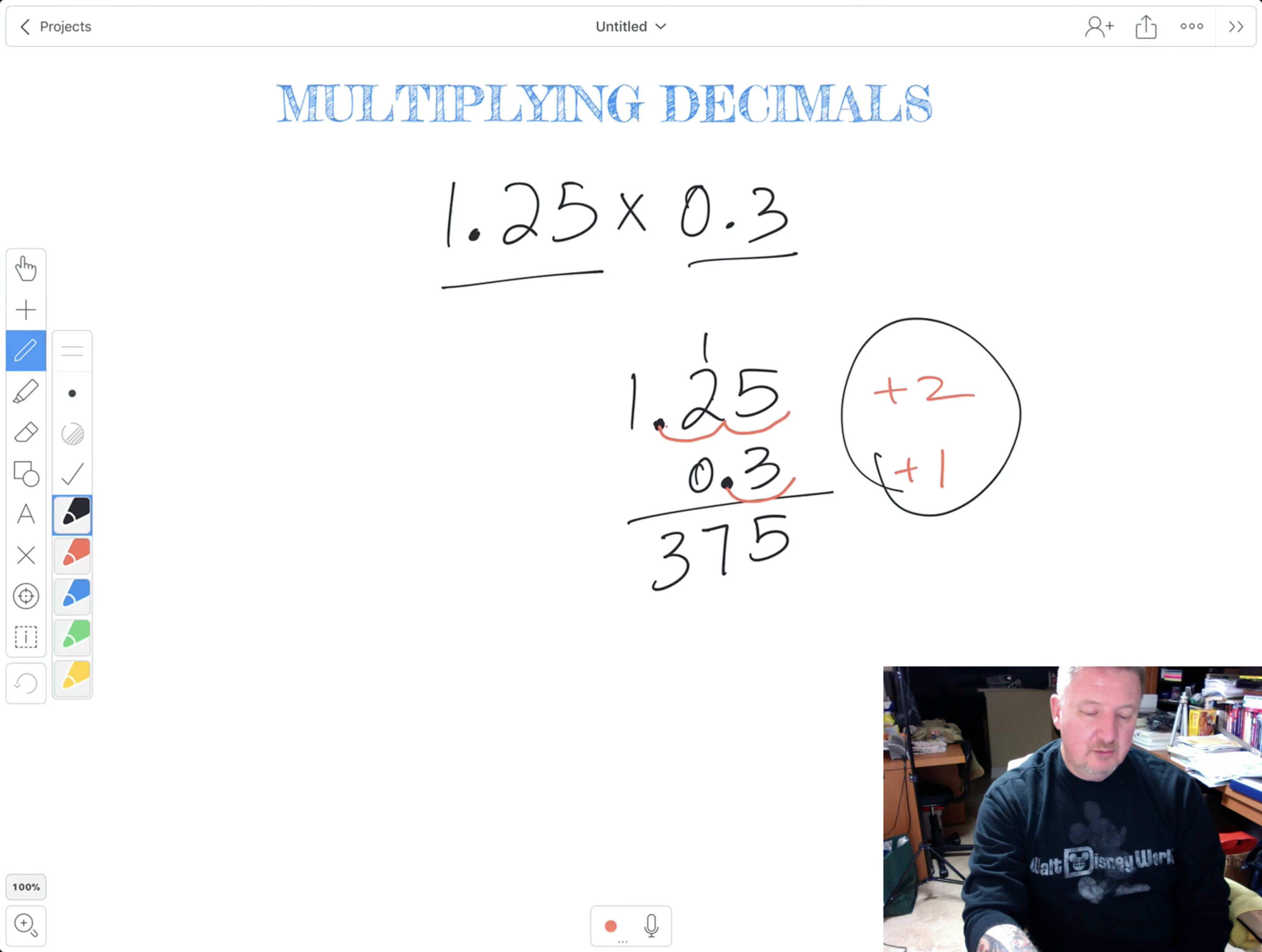So, first number, I had 2. Second number, I had 1. So that means in my answer, I'm going to have the sum of those numbers. 2 plus 1 is 3. So my answer is going to have 3 decimal places.